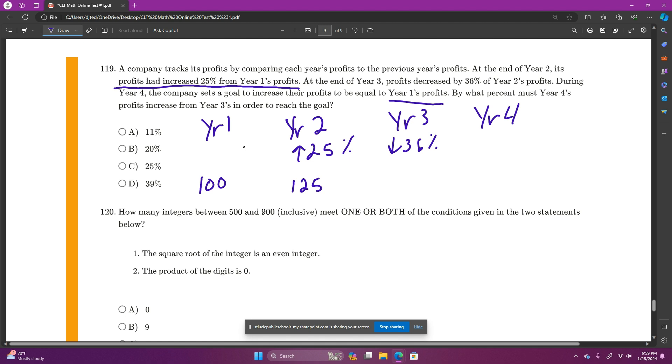And then the next year they went down 36% of this. So $125, and we want to know what's 36% of it? 36% of $125 is how much. So this will be year three's amount of decrease. So I'm going to cross multiply. 100x equals 125 times 36.